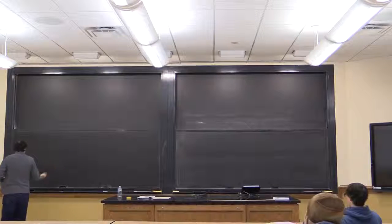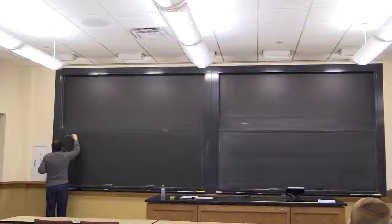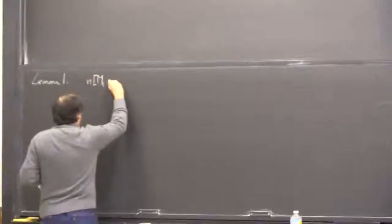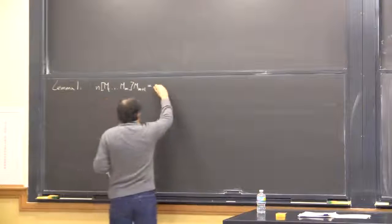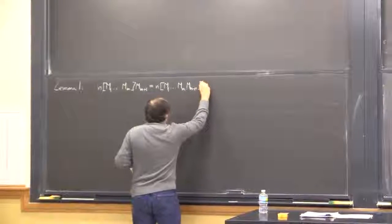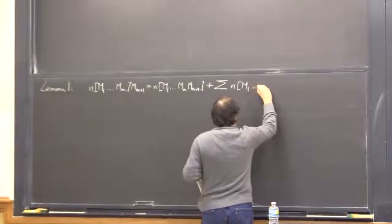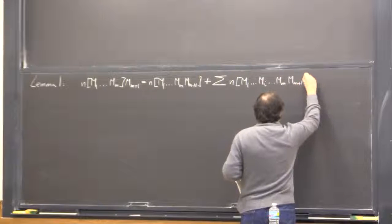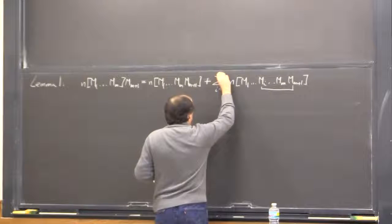Let me remind you what we did. We considered the first of the two lemmas last time — Lemma 1 — which tells us the following: we take a normal product of M operators, multiply it by operator M_{M+1}, and on the right-hand side we get the normal product of all operators plus a sum over normal products where there is exactly one contraction involving M_{M+1} with one of the remaining operators. We sum over i from 1 to M.